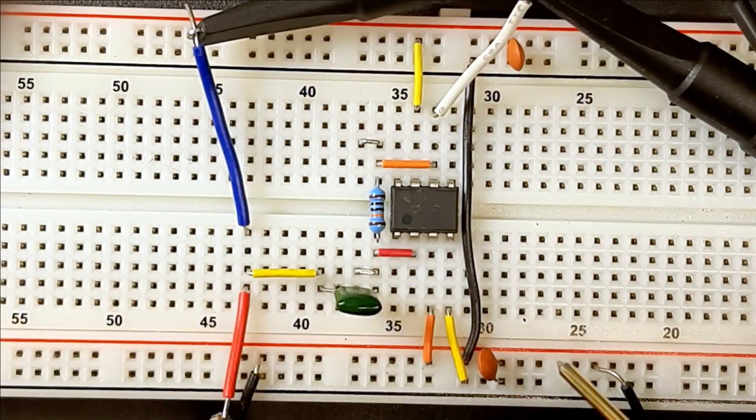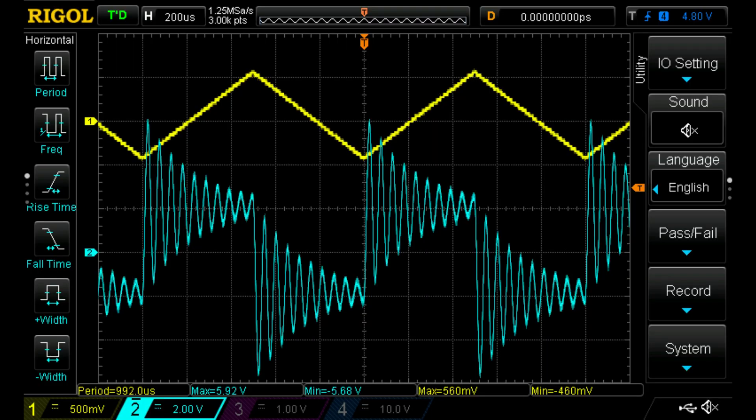I've got it here on the breadboard. I'll turn it on and... What the heck? I don't know what to call that mess, but it definitely is not a 4 volt square wave. What happened?